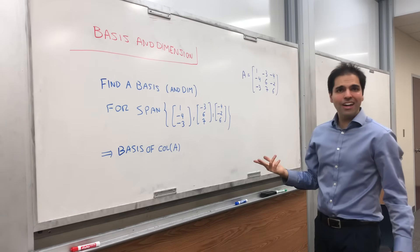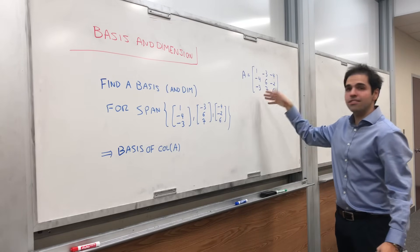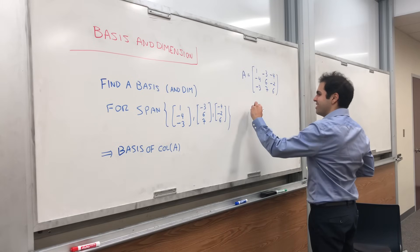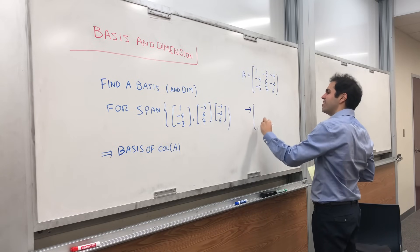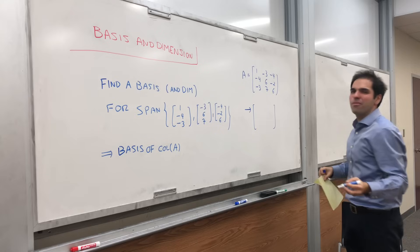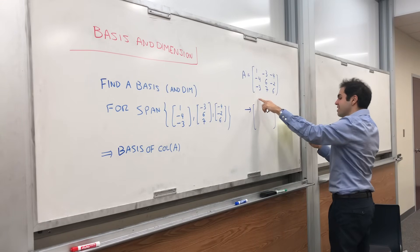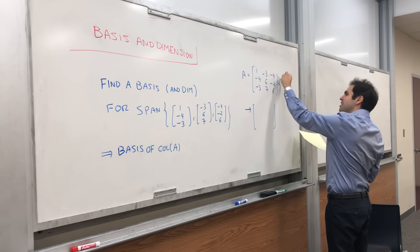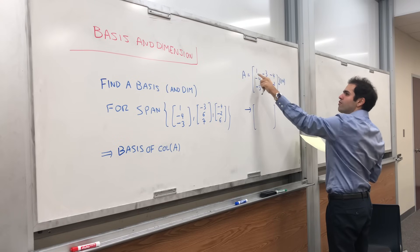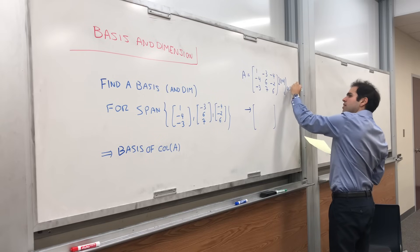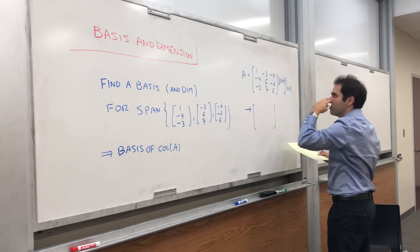How can you find a basis for the column space? As usual, you just row reduce. That's a nice thing about linear algebra. If you don't know how to solve a problem, just row reduce, and it should give you the answer. So then, let's add four times the first row to the second row, and three times the first row to the third row.